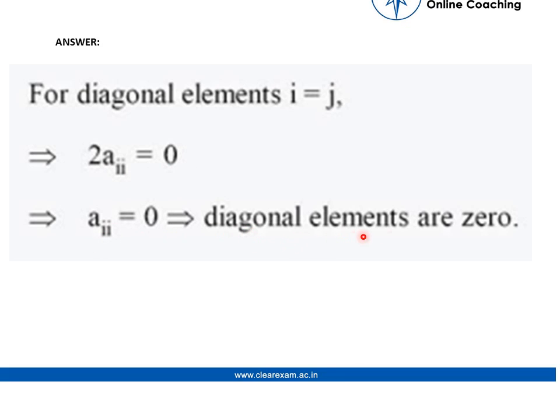That means the diagonal elements are always 0 in a skew symmetric matrix. Thanks.